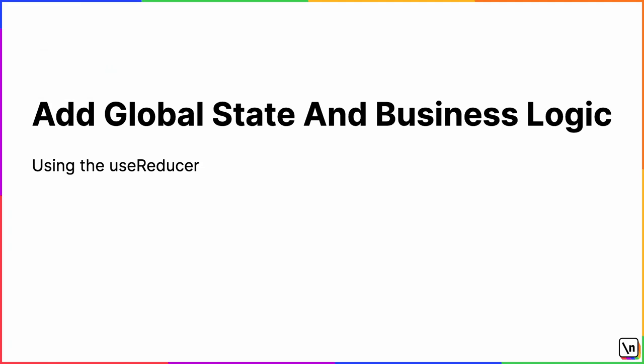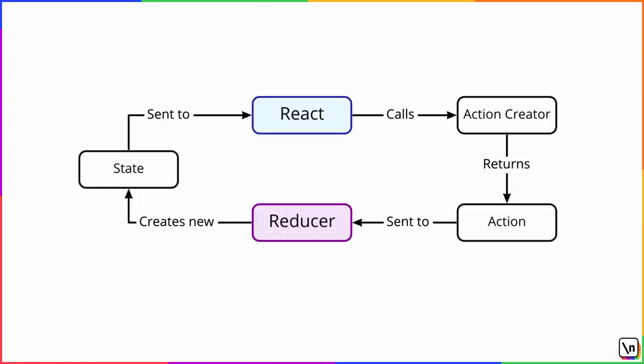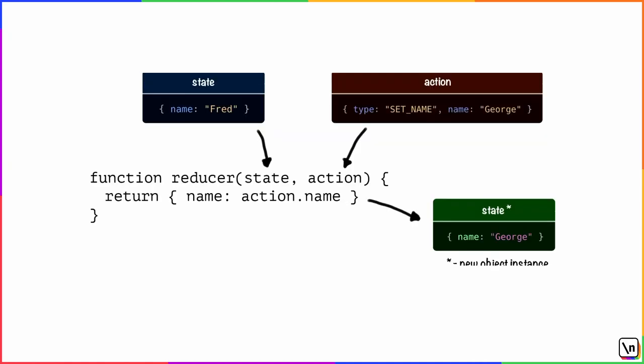Add global state and business logic using useReducer. Soon we'll implement drag and drop using the react-dnd library and state management. Instead of an external framework like Redux or MobX, we'll use a 'poor man's Redux' with the useReducer hook and React Context API. useReducer is a React hook that manages complex state objects — instead of mutating the original object, we always create a new instance with desired values. An action creator is called (usually as a reaction to user interaction), it returns an action sent to a reducer via dispatch, the reducer generates new state from old state plus the action, and the cycle repeats. A reducer is a function that calculates new state by combining old state with an action object.